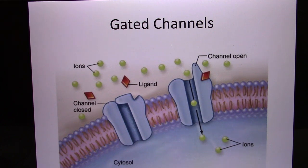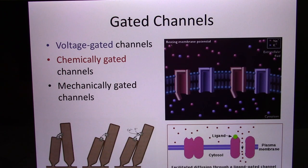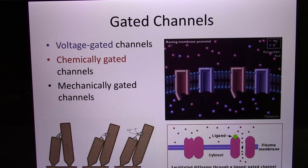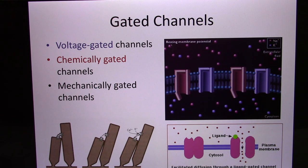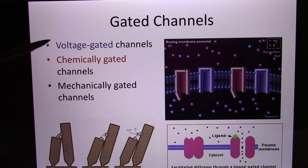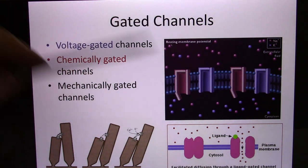Most ion channels are closed — they have a gate, called a gated channel, that you can open. Depending on the mechanism, we have different kinds of gated ion channels in three categories: voltage-gated, chemically-gated, and mechanically-gated. The voltage-gated ion channel depends on voltage — we'll discuss it in the context of muscle and neuron. They sense the voltage change and open, allowing ions to flow through.